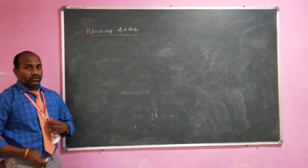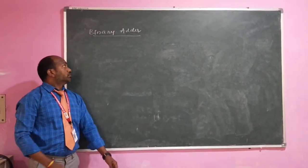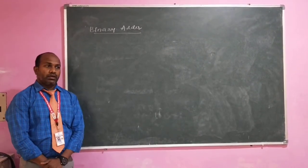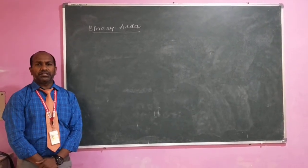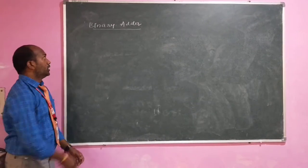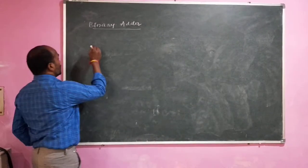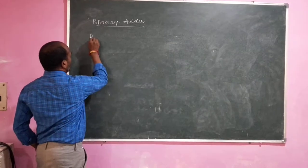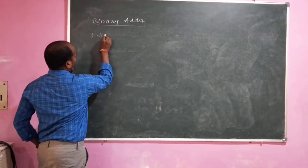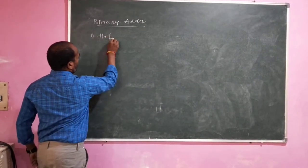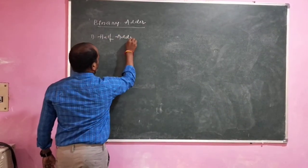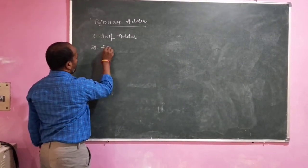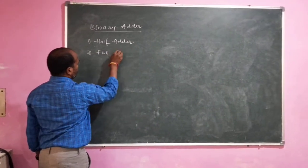As we know, basically an adder is a digital circuit which performs the addition of two numbers. There are two kinds of adder: one is a half adder and the second one is a full adder.